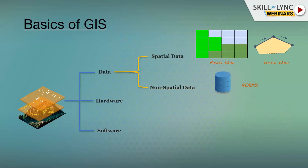The main building blocks of GIS are spatial data and non-spatial data. Spatial data consists of three basic forms: a point, a line, and a polygon. A point represents a specific location like a restaurant or gas station. A line represents streets or highways. A polygon represents buildings or land parcels. You can define anything in the world using these three building blocks.